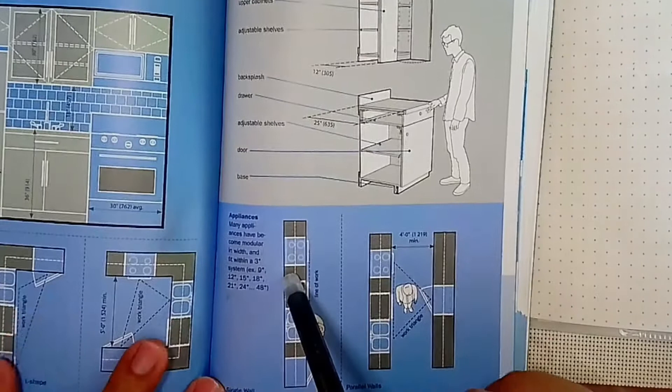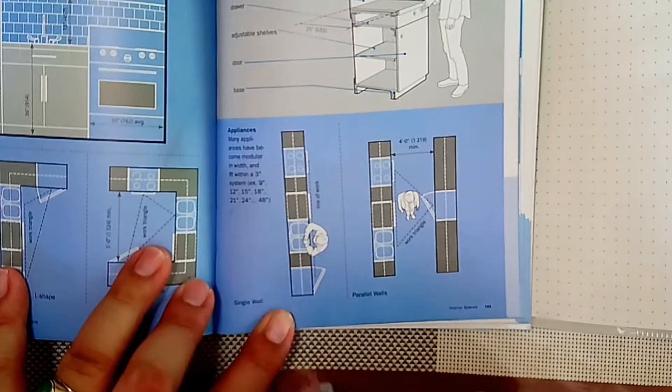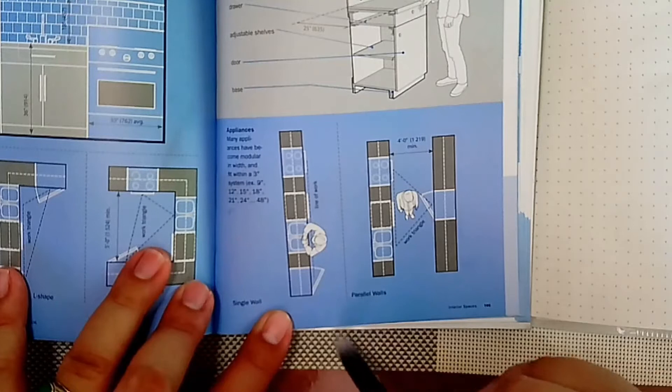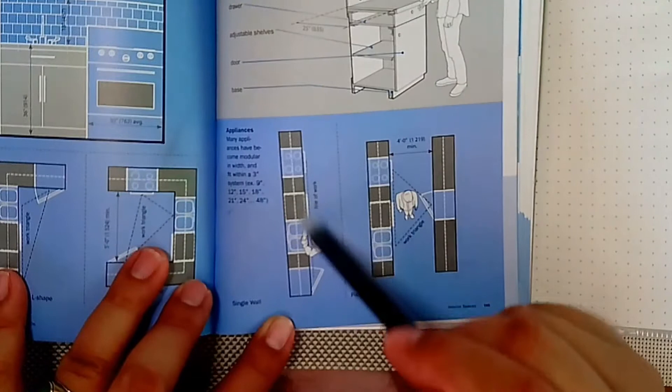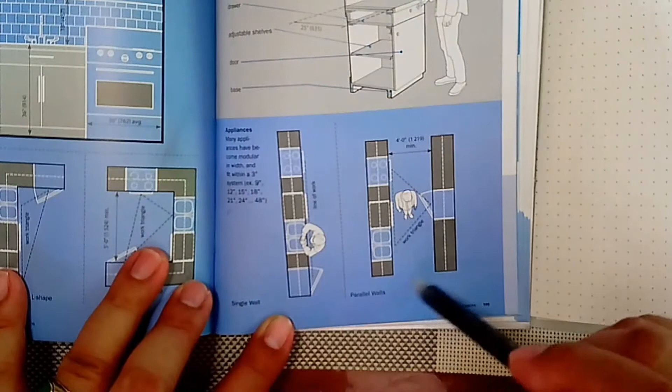Many appliances have become modular within a three-inch system, for example nine inches, 12 inches, 15, 18, 21, 24, and so on. In a single wall, this is the line of work, so there's no triangle, it's linear. You could also do parallel walls.